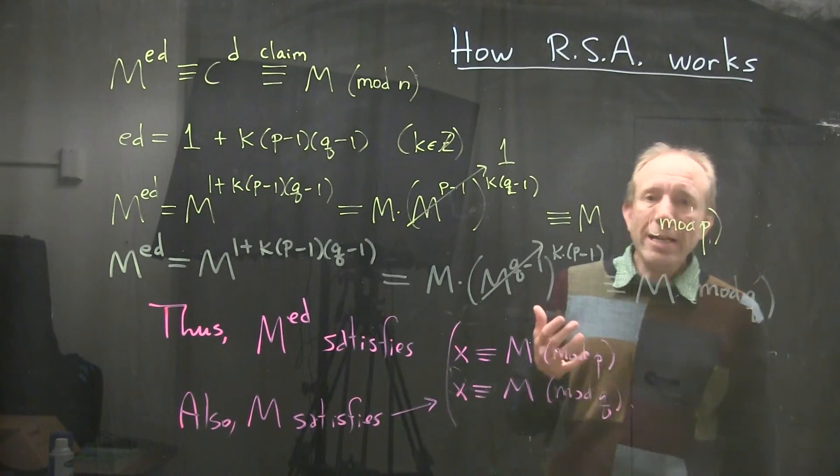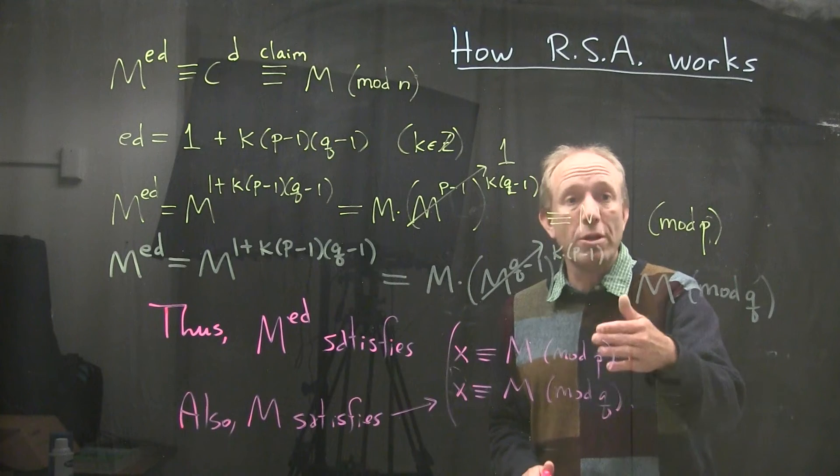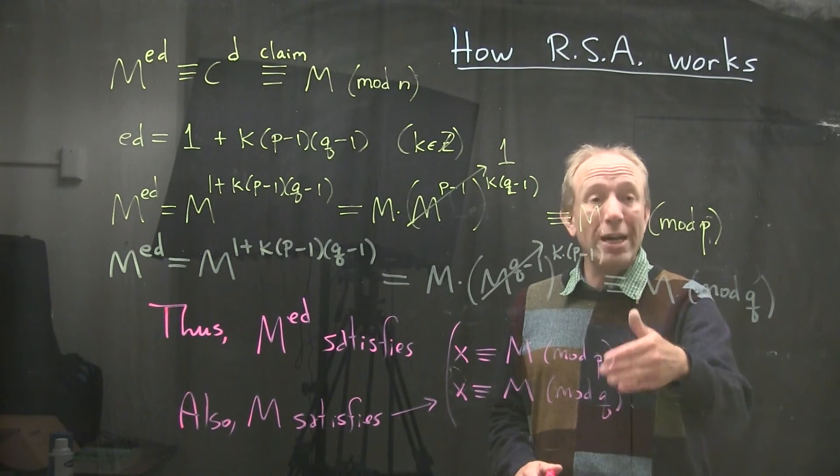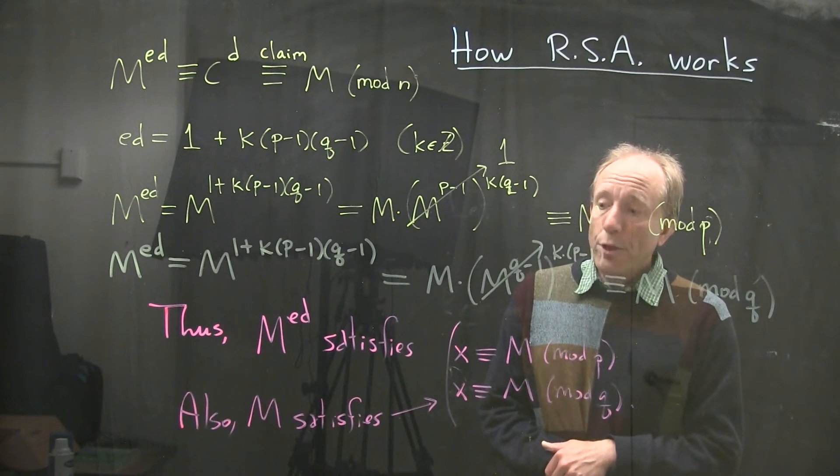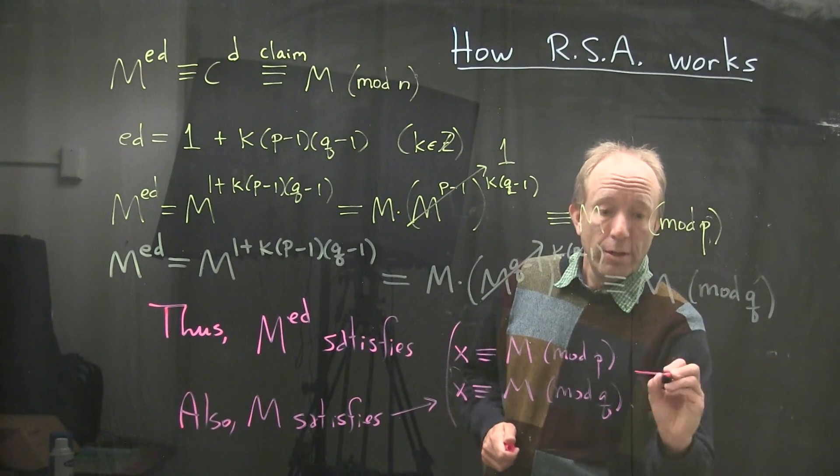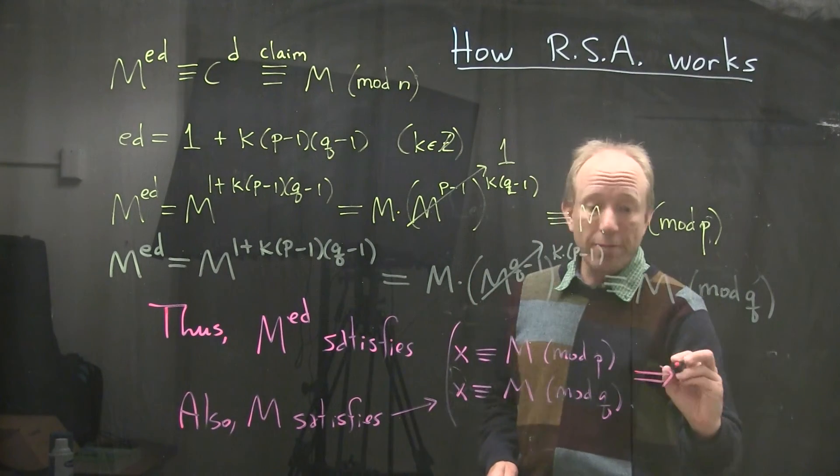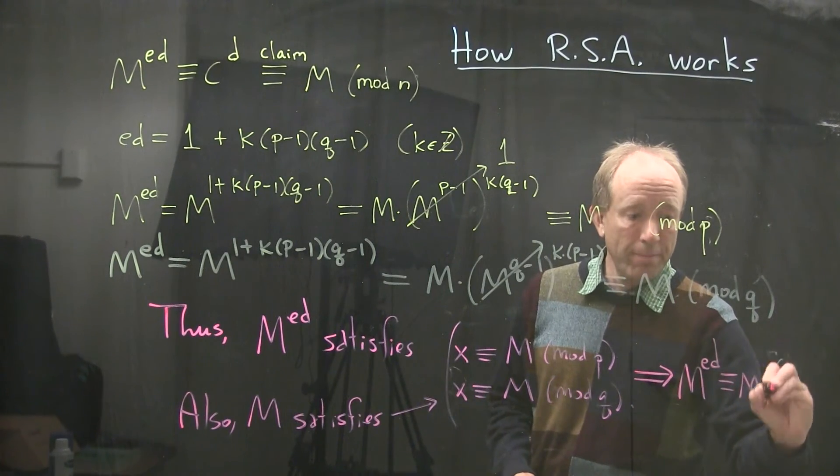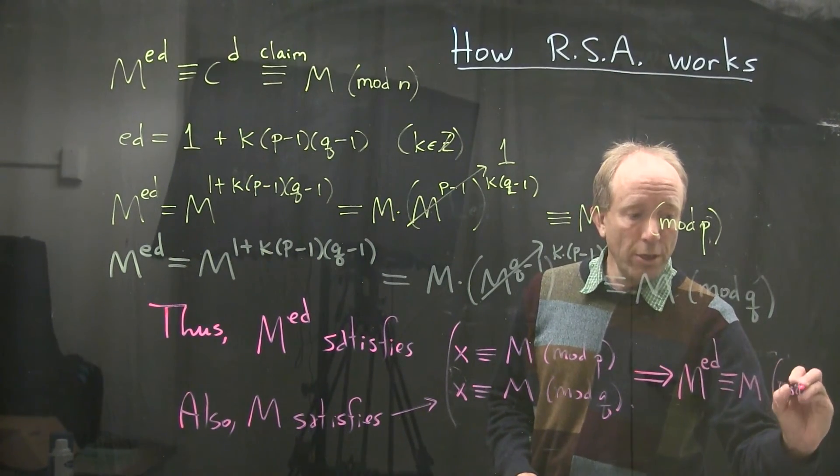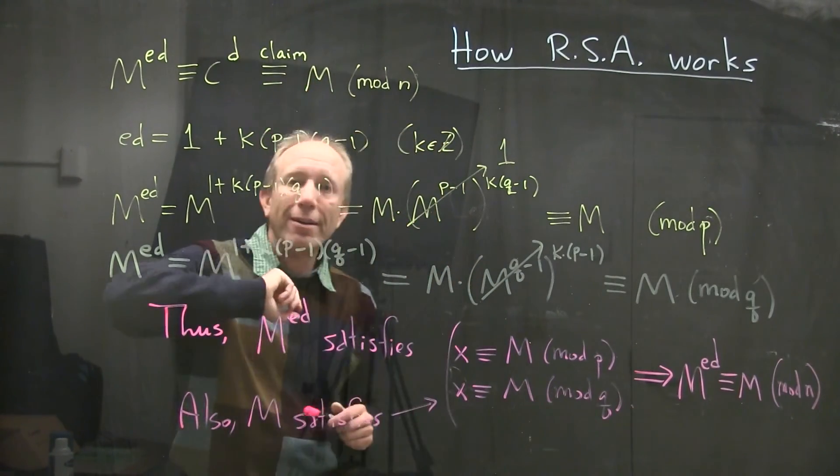And the Chinese remainder theorem says that if you have a system of congruences where the moduli are pairwise relatively prime, that those solutions are always unique modulo the product of the primes. In other words, M to the ED is congruent to M modulo little n. And that's really what I was claiming.